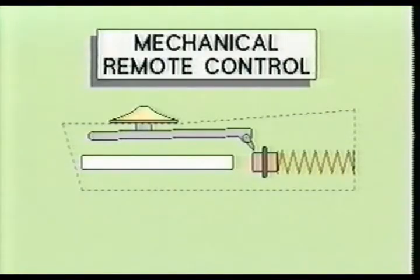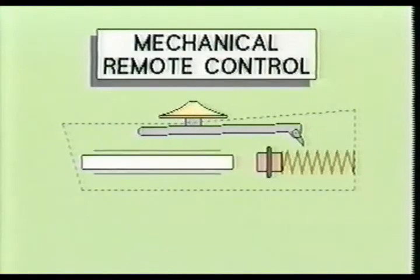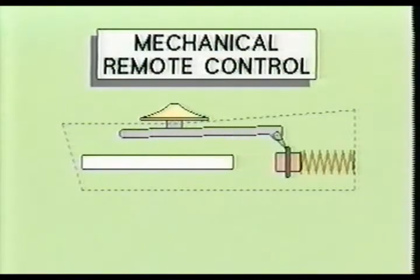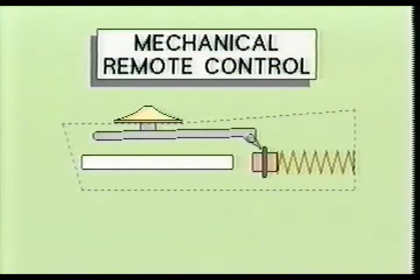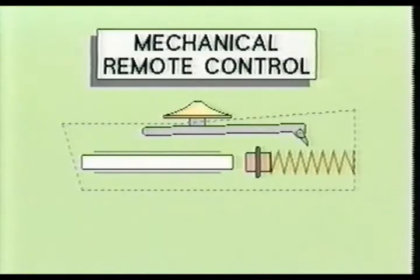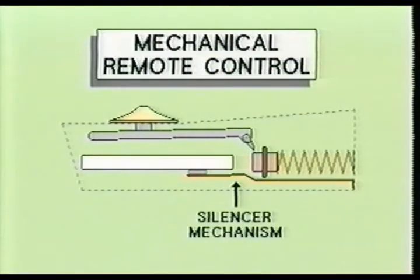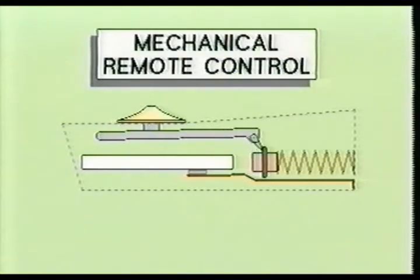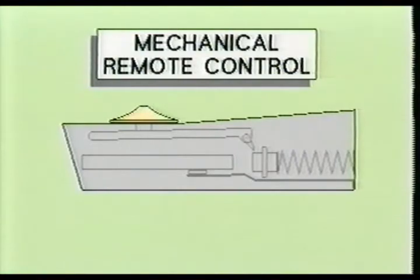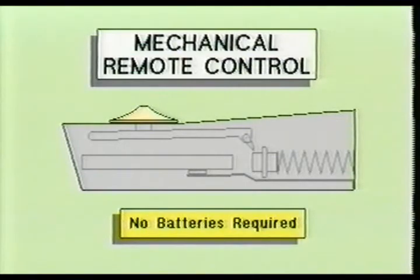The control unit works by the user depressing one of the function buttons, which creates tension on the spring. When the button comes to the end of its travel, the spring will be released and recoil, allowing a small hammer to strike the end of the aluminum rod. The aluminum rod thus generates a specific ultrasonic frequency which the television receiver recognizes as a function signal. A silencer is sometimes used in the remote control device to end the vibrational ringing of the aluminum rod after a predetermined time. Although acoustic remote control devices are outdated by today's newer electronic technology, they still have one advantage over modern remote control units: no batteries are required.